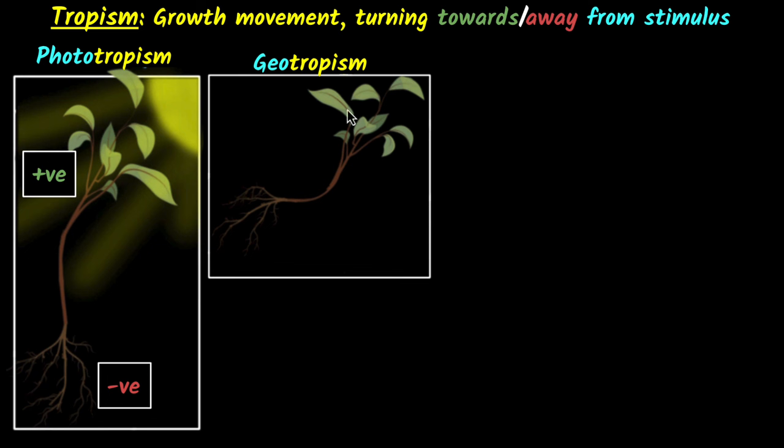Now look at the shoot. The shoot is going up, but gravity is down. So it's actually going away from the stimulus, away from the earth, away from gravity. So this is negative geotropism.